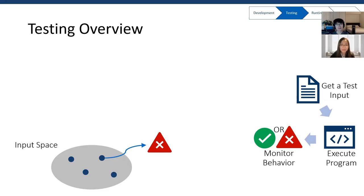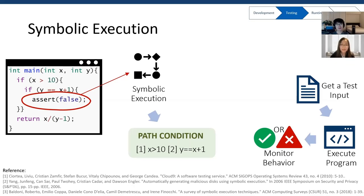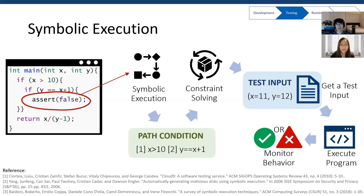In past years, symbolic execution is a popular testing approach to get test input. It reasons from code structure, data dependency, and control flow. Suppose we want to fail an assertion: first, we use symbolic execution to get path conditions related to that code line. Then these conditions are fed into a constraint solver to get a concrete solution. For example, when x equals 11 and y equals 12, the assertion would fail. This approach is effective, particularly on small software, but it is too expensive for large systems.